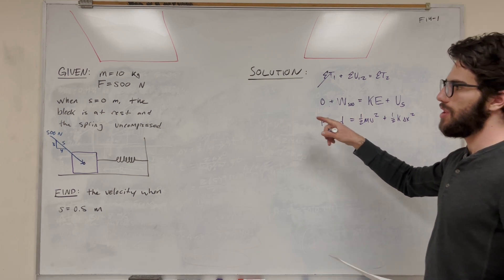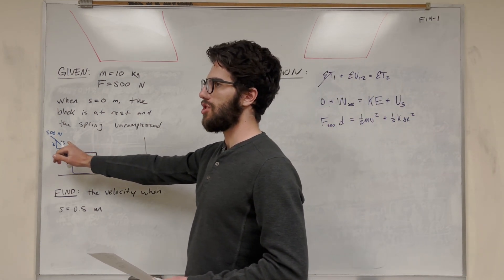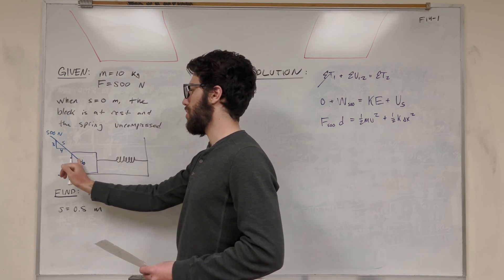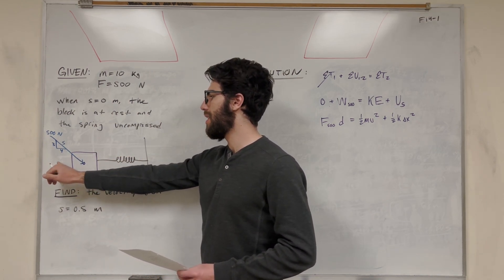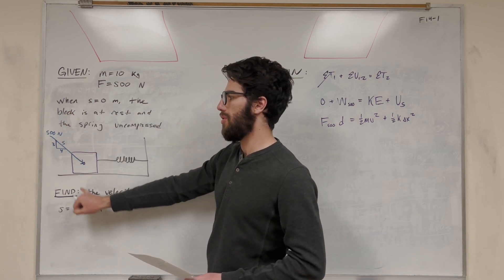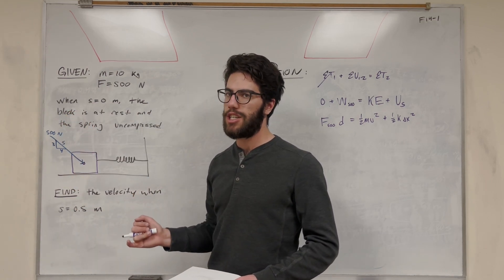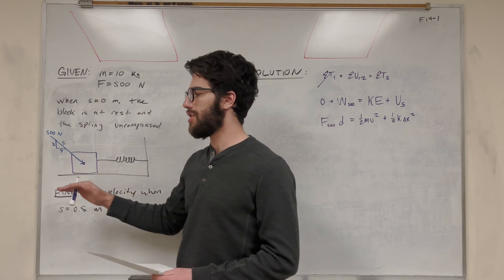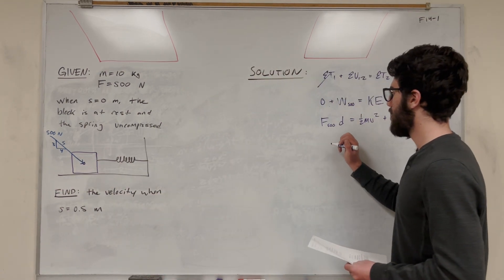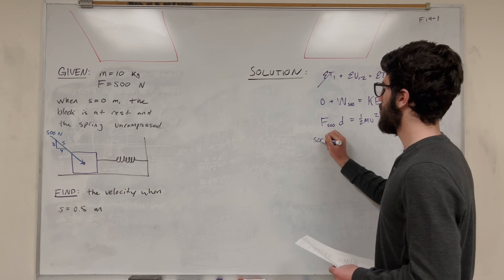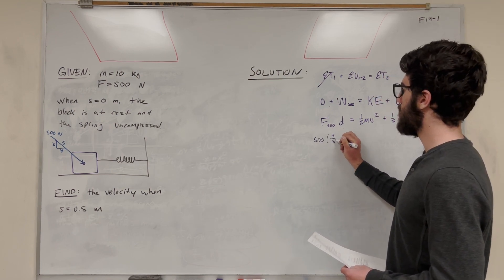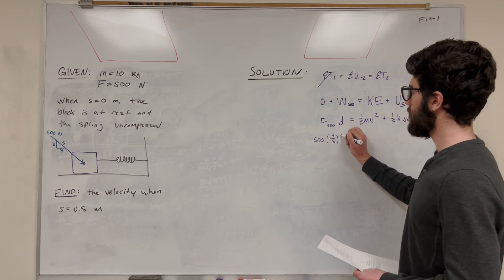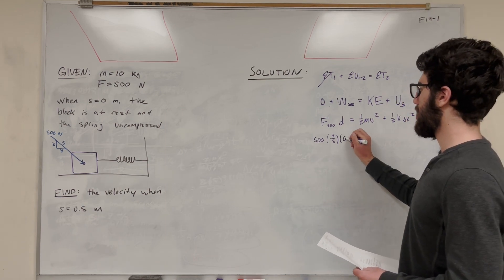Force. We know it's 500 Newtons, but it's pushing at this 3, 4, 5 angle triangle. We just want to know what's pushing in the x direction, because that's the direction that we're taking this to be in. Anything that we push down, the block isn't moving up or down, so change in distance in the y direction is equal to 0. We're only interested in change in distance of the x direction, which is why we have to take that 500 and multiply it by 4 fifths. We can see that by the right triangle. Distance is 0.5 meters, that's what we're traveling.